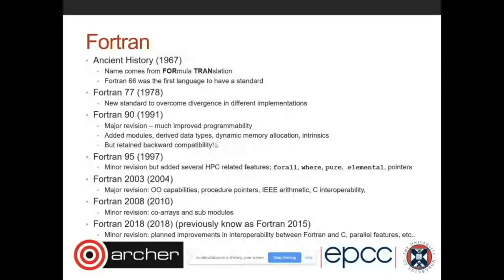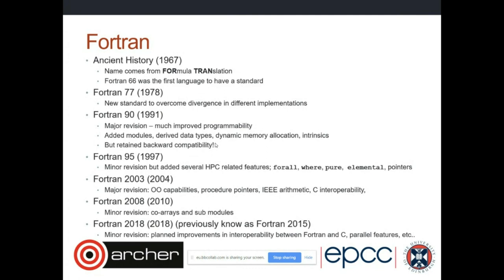There was a big change between Fortran 77 and Fortran 90 — a major revision with lots of new features and a new way of writing programs. Then another major revision in 2003 brought in object-oriented functionality. After 2003, additions have tended to focus on new parallelization approaches. One feature called co-arrays provides a different way of parallelizing your program without using MPI, letting the Fortran compiler generate the parallelization code for you.